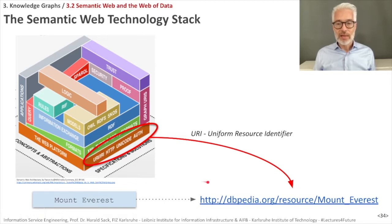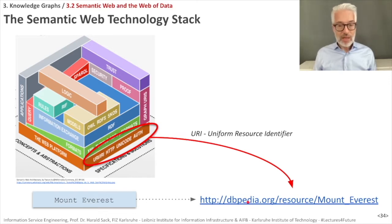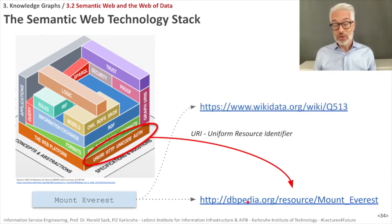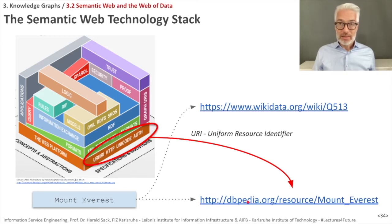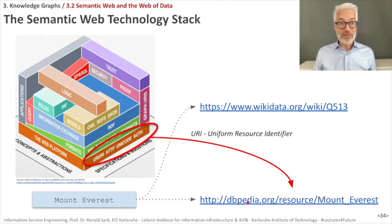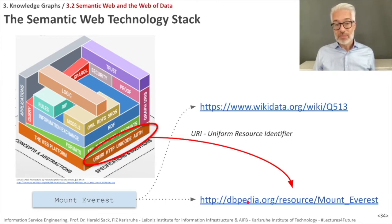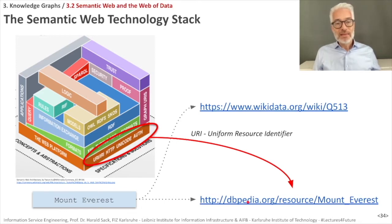Mount Everest could be referred to by an information or reference page in a huge global knowledge base called DBpedia, which has been extracted from Wikipedia. I could also use another knowledge base like Wikidata — part of the Wikimedia universe — which is a universal database where you can describe things via structured data and also has a semantic web interface. The web platform also uses HTTP as the standard web access and communication protocol, along with existing authorization mechanisms.